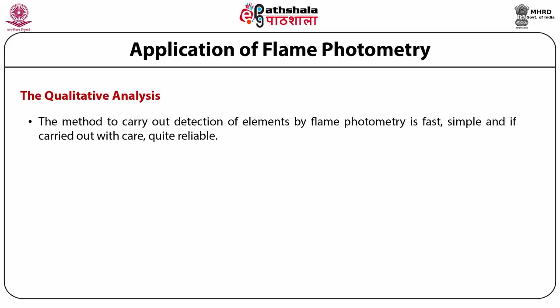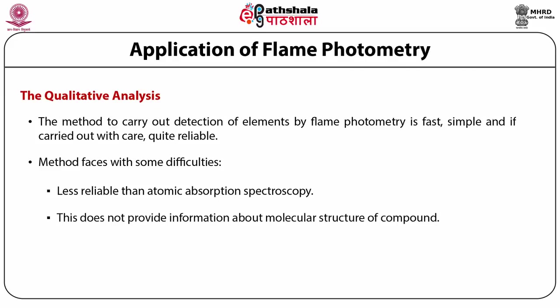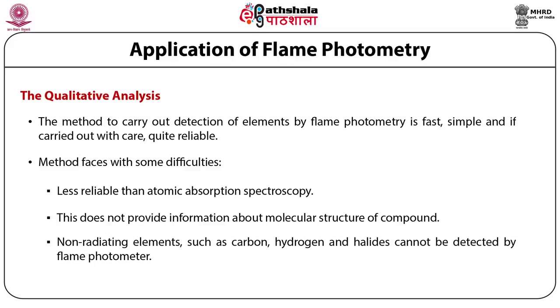The method of qualitative detection by flame photometry is fast, simple, and when carried out with care, quite reliable. However, it faces difficulties: it is less reliable than atomic absorption spectroscopy, it does not provide information about the molecular structure of compounds, and non-radiating elements such as carbon, hydrogen, and halides cannot be directly detected. However, under special circumstances they can — for example, chlorine can be precipitated as silver chloride, which is then aspirated into the flame to determine silver, and from the result the chlorine content can be calculated.